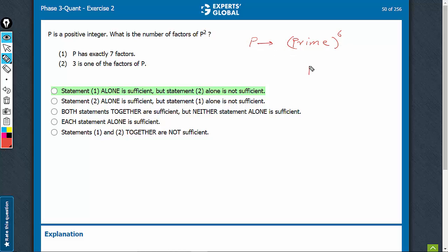P squared, therefore, will be of the form prime raised to power 12. Therefore, the number of factors of P squared will be 12 plus 1, which equals 13.